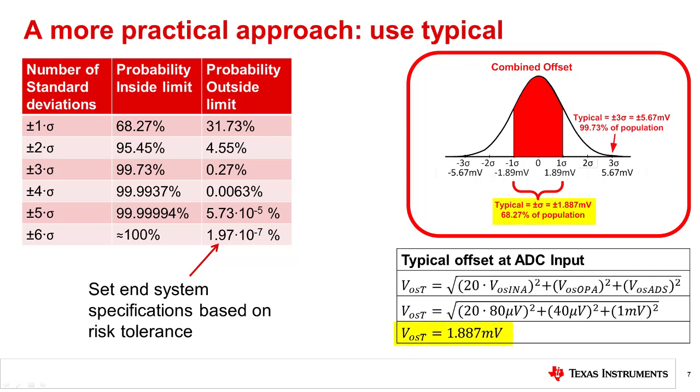The final system distribution has a standard deviation of plus or minus 1.887 millivolts. This is analogous to a typical of plus or minus 1.887 millivolts for the system. But what is the maximum offset error for our system? The maximum can be set according to the risk tolerance in your system specification. The table shows what percentage of a population will be inside a limit set according to the number of standard deviations. For example, if the system specification maximum is set to plus or minus 3 standard deviations, then 99.73% of the population will be inside that limit, and 0.27% of the population will fall outside of the limit.